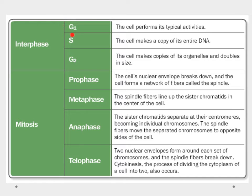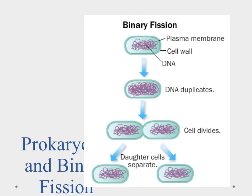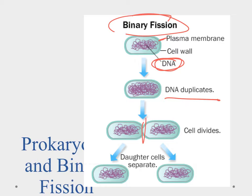Mitosis is how eukaryotic cells divide. Prokaryotic cells, which have no nucleus, use a simpler process called binary fission. In binary fission, the cell has only a plasma membrane with no internal membranes, and its DNA floats in the cytoplasm. The DNA duplicates, then the cell simply divides to produce two identical daughter cells — a quicker process because it skips the complex steps of mitosis.